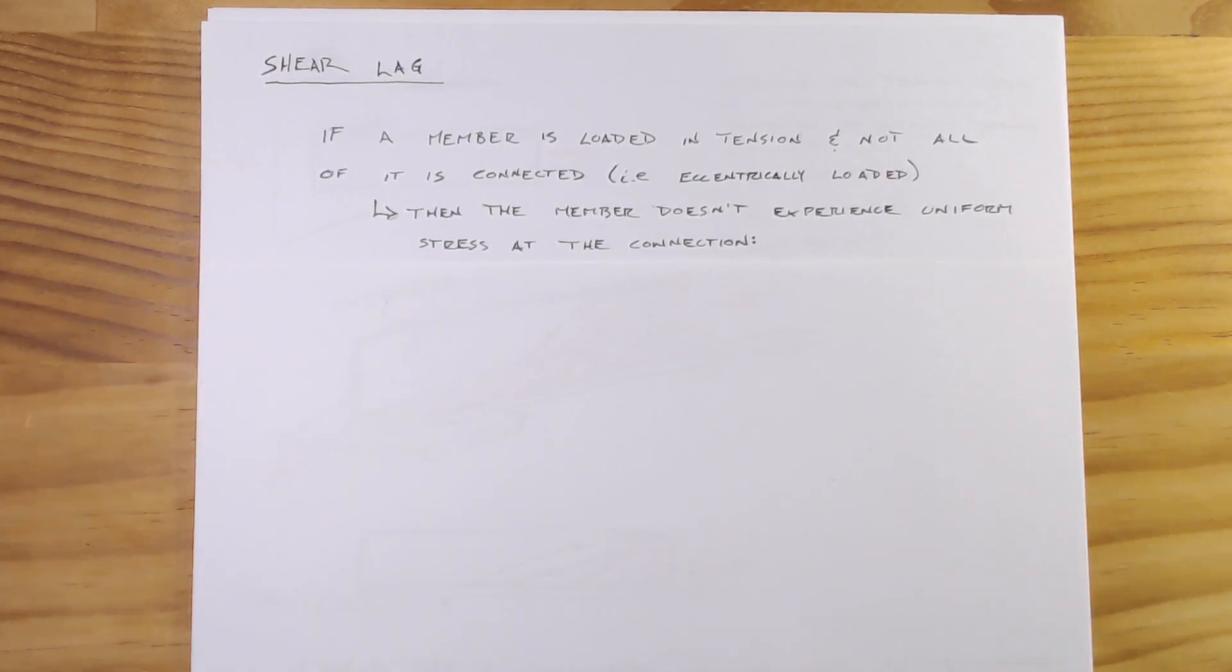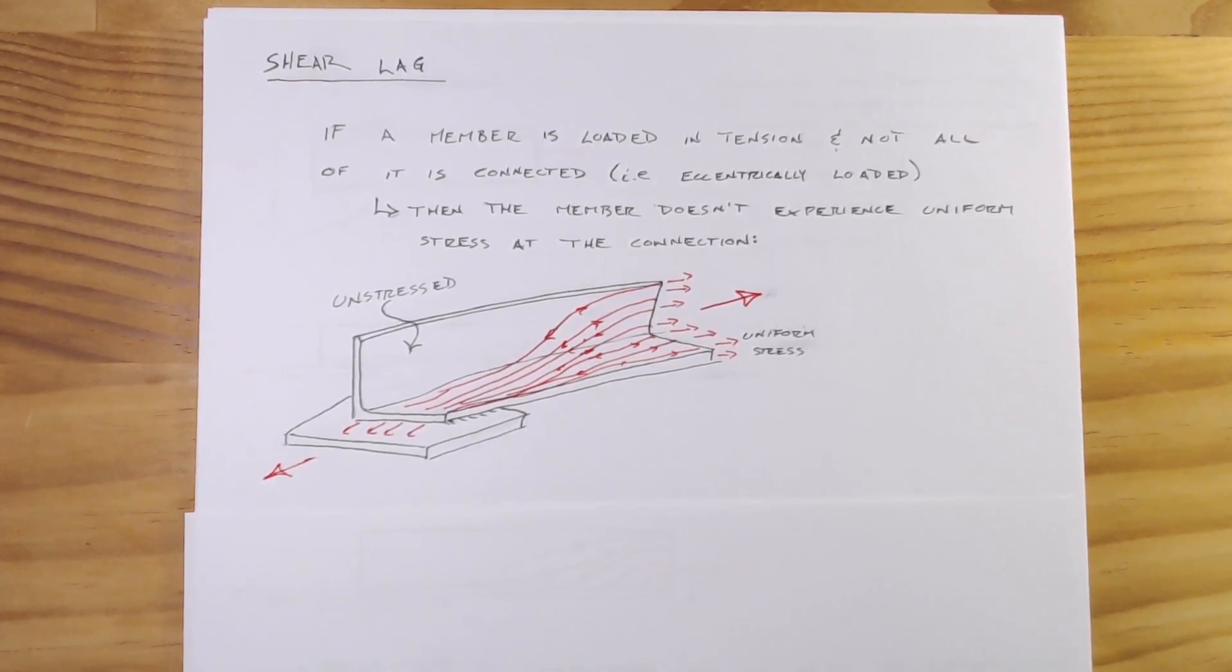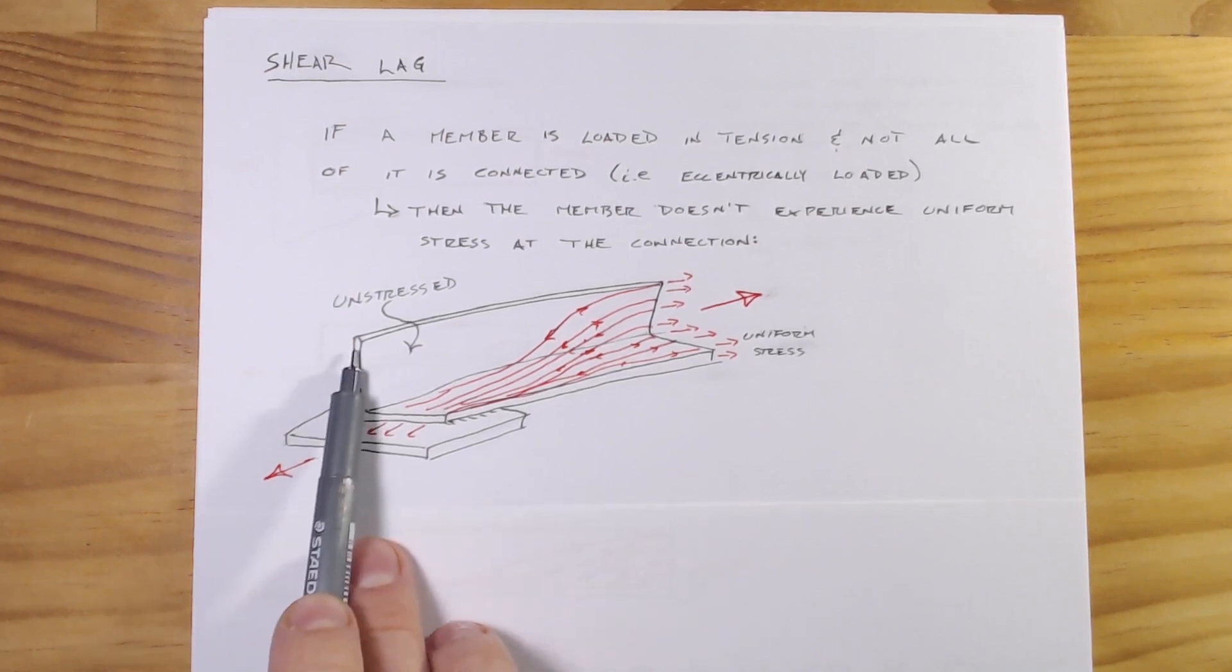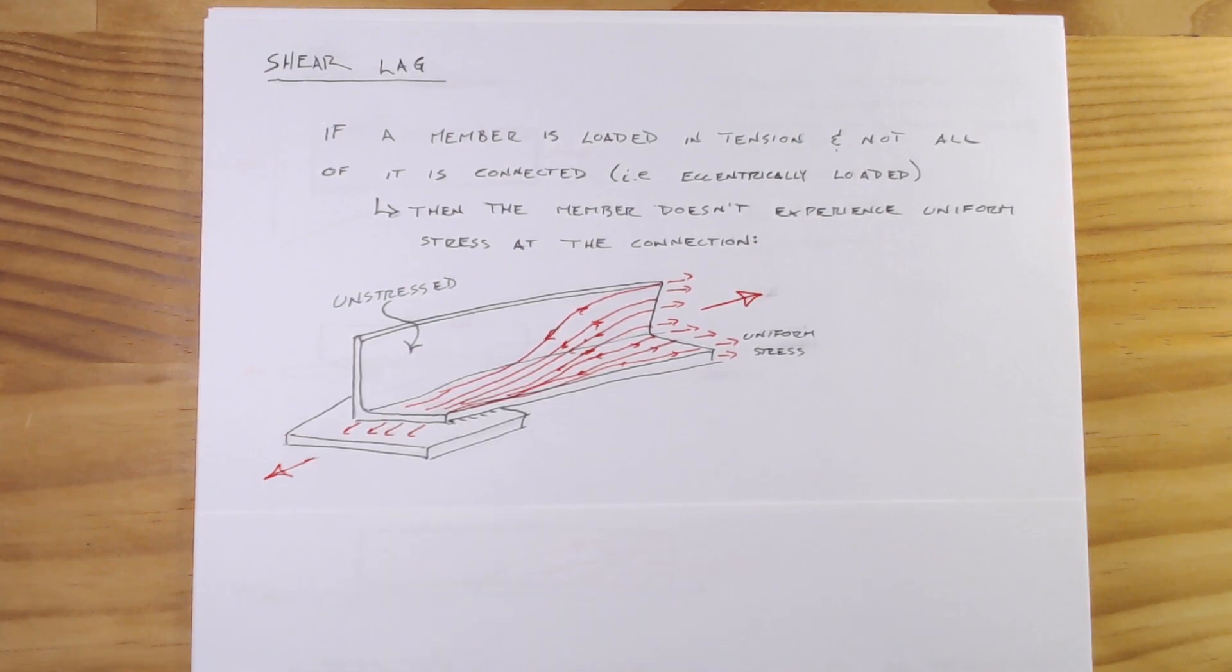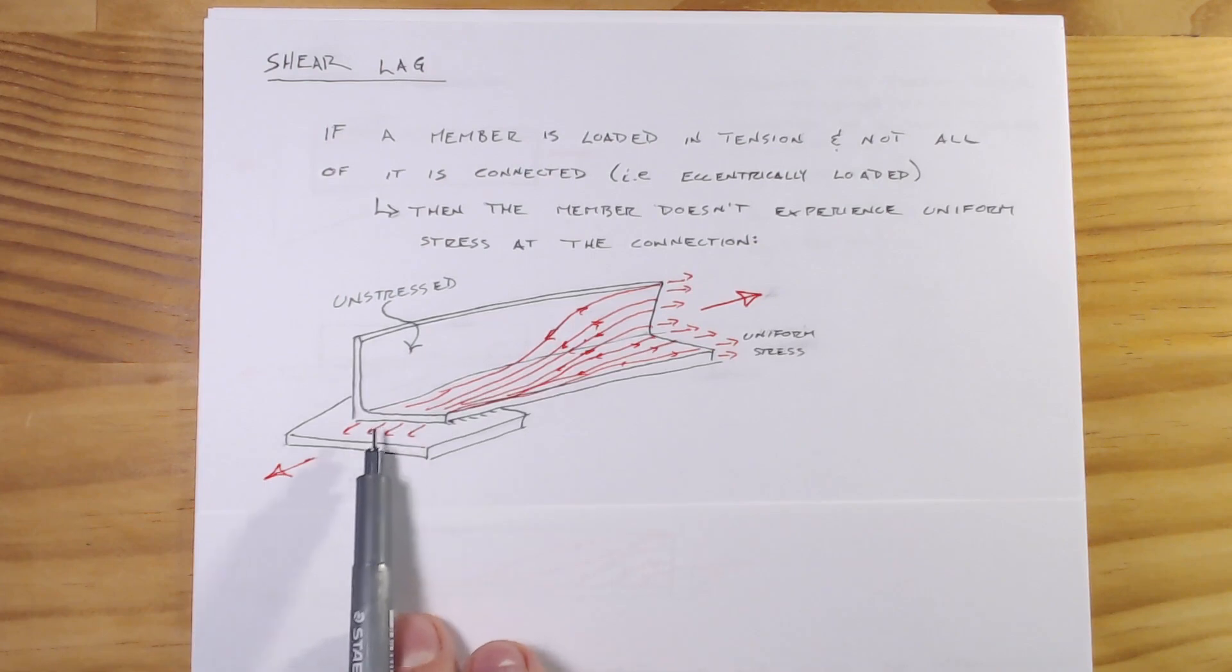Shear lag really occurs when we've got a member which is loaded in tension but not all of it is connected to where you're pulling it from. With words it's kind of hard to visualize so I've drawn you a little picture. What we have here is this angle section in tension. The first thing that you note is that only the bottom leg is connected, the top isn't, and so as we're pulling on it not the entire section is pulled.